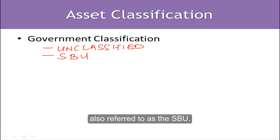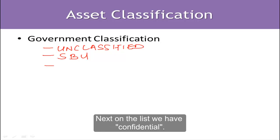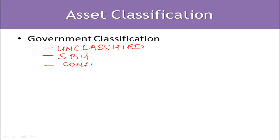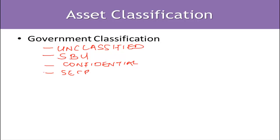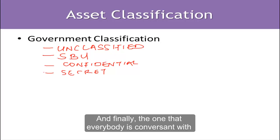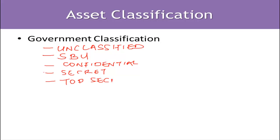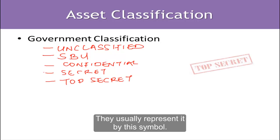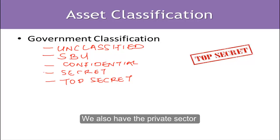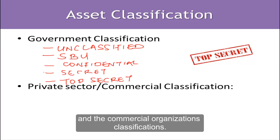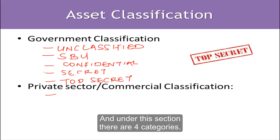Next is sensitive but unclassified, also referred to as SBU. Then we have confidential, followed by secret, and finally the one that everybody is conversant with — top secret, usually represented by a special symbol. We also have the private sector and commercial organization classifications, and under this section there are four categories, the first being public.